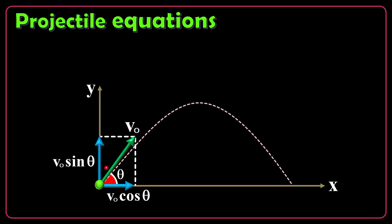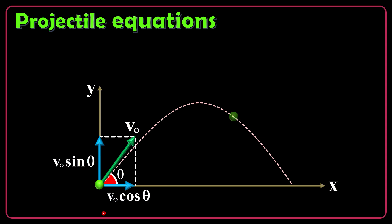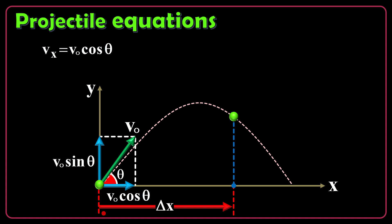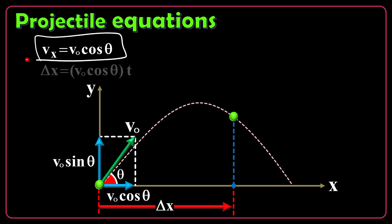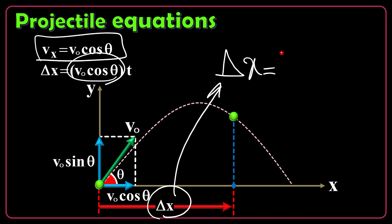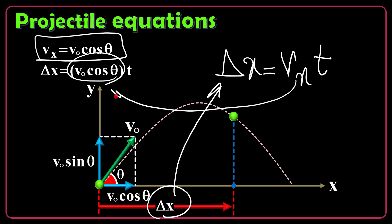Projectile equations. The equations are very easy. Let's consider the general case with an initial velocity of v0 with vertical component v0 sine of theta and horizontal component v0 cosine of theta. At any point, I expect a displacement of delta x for uniform horizontal motion. So vx will be v0 cosine of theta at all times, and delta x equals vx times t, as it's uniform motion.